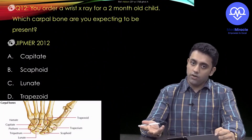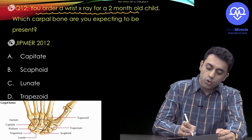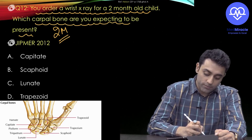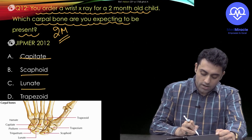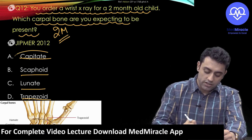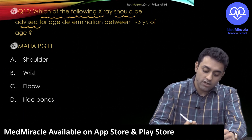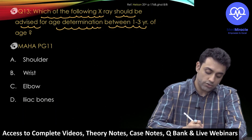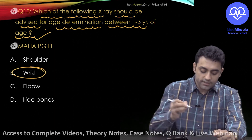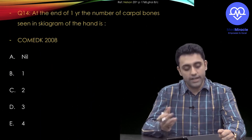MCQ practice: You order a wrist X-ray of a two-month-old child — which carpal bone do you expect to see? Using the mnemonic, 'C for Capitate comes at two months,' the answer is Capitate. Second question: which X-ray should be advised for age determination between one to three years of age? The answer is the wrist X-ray.